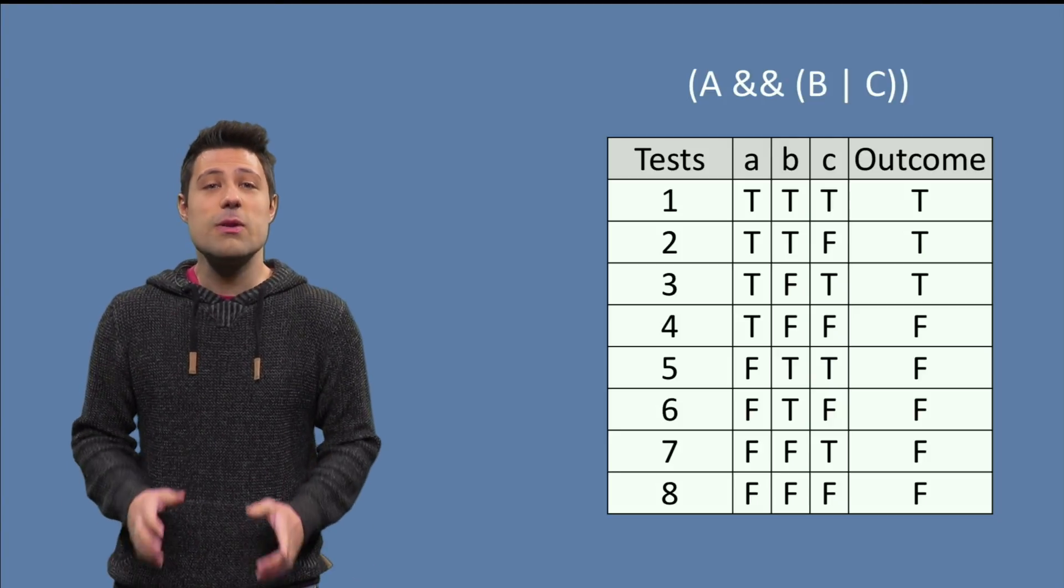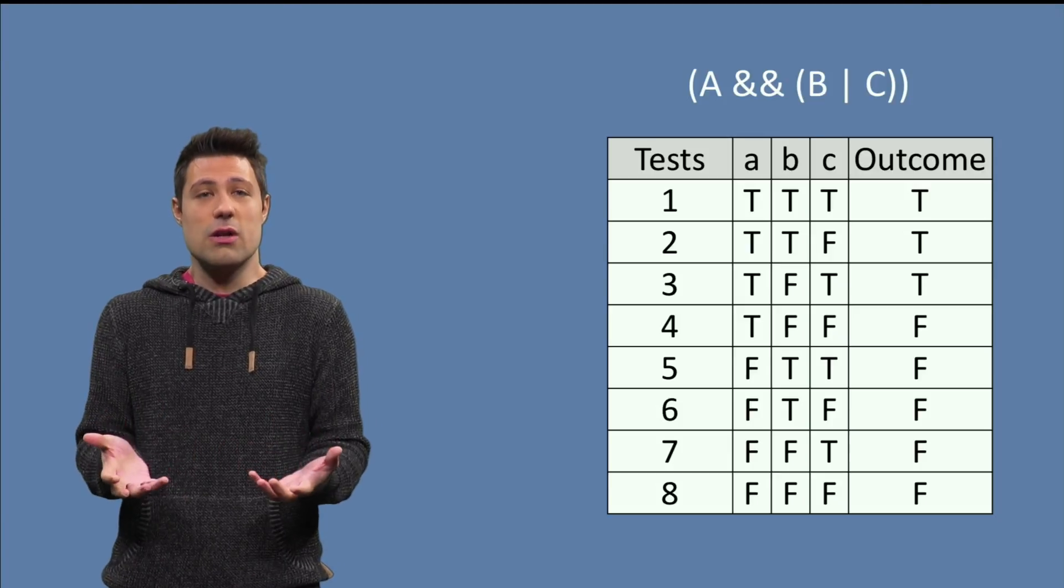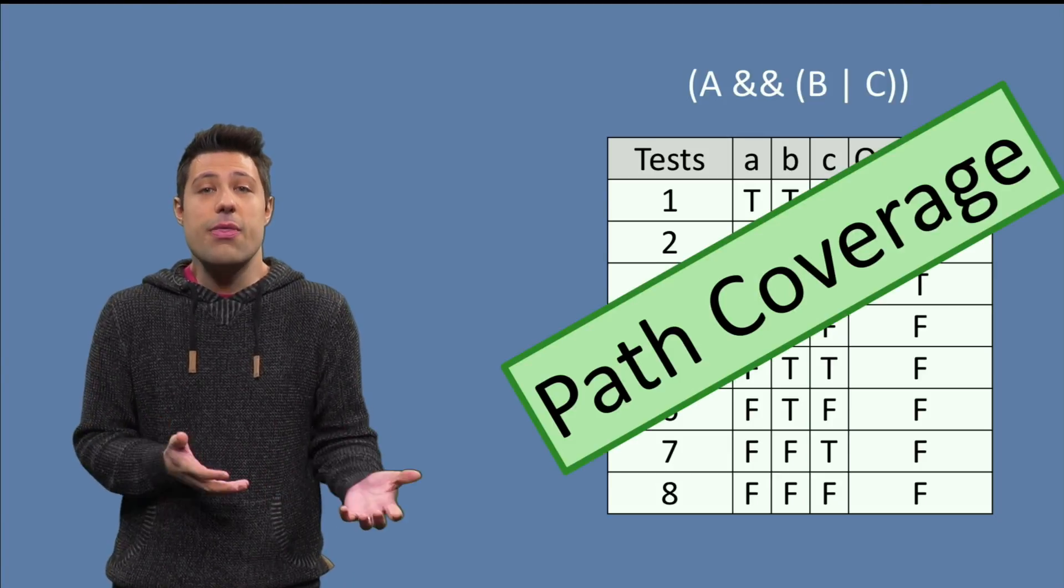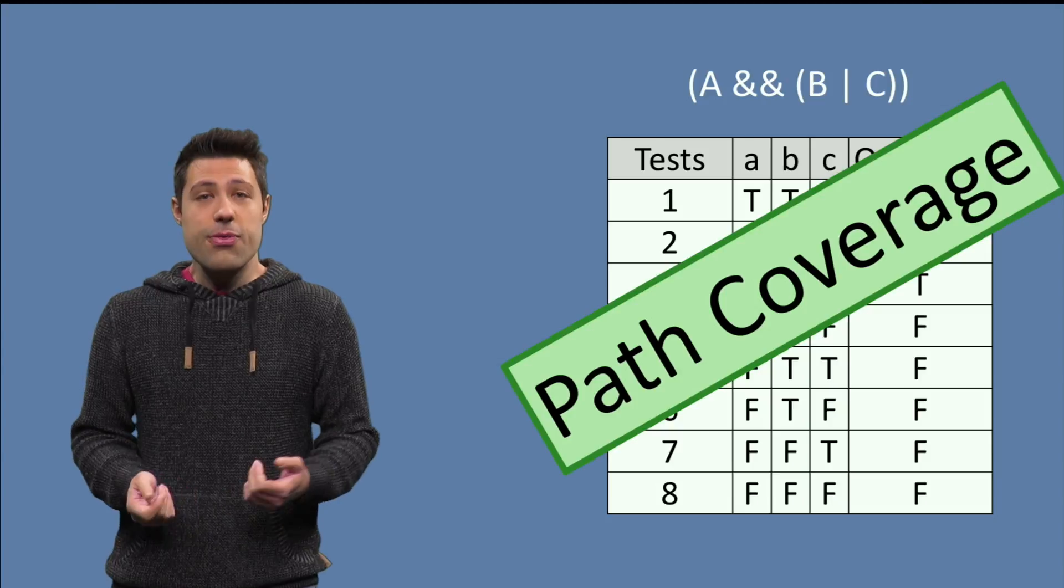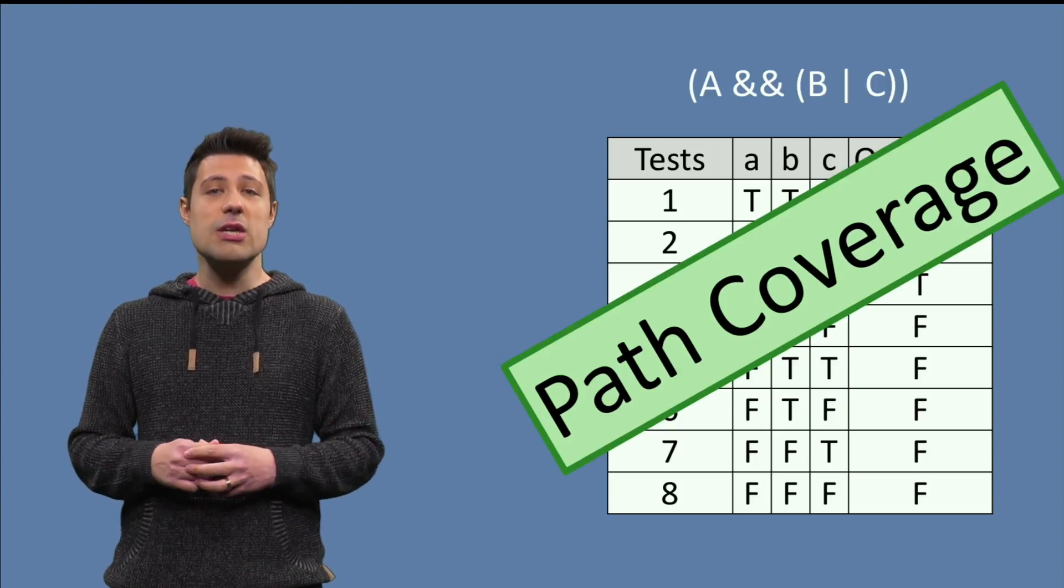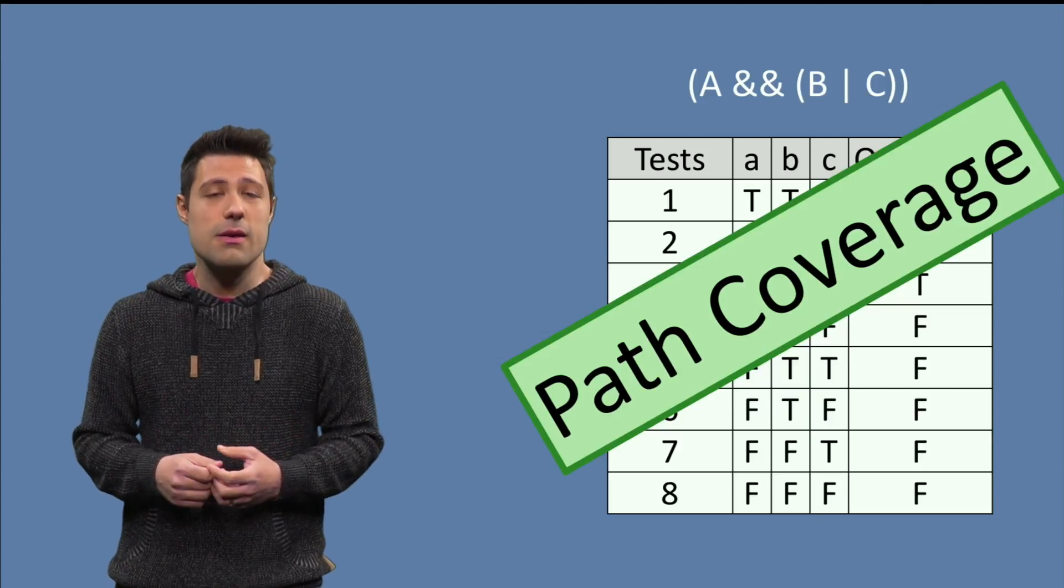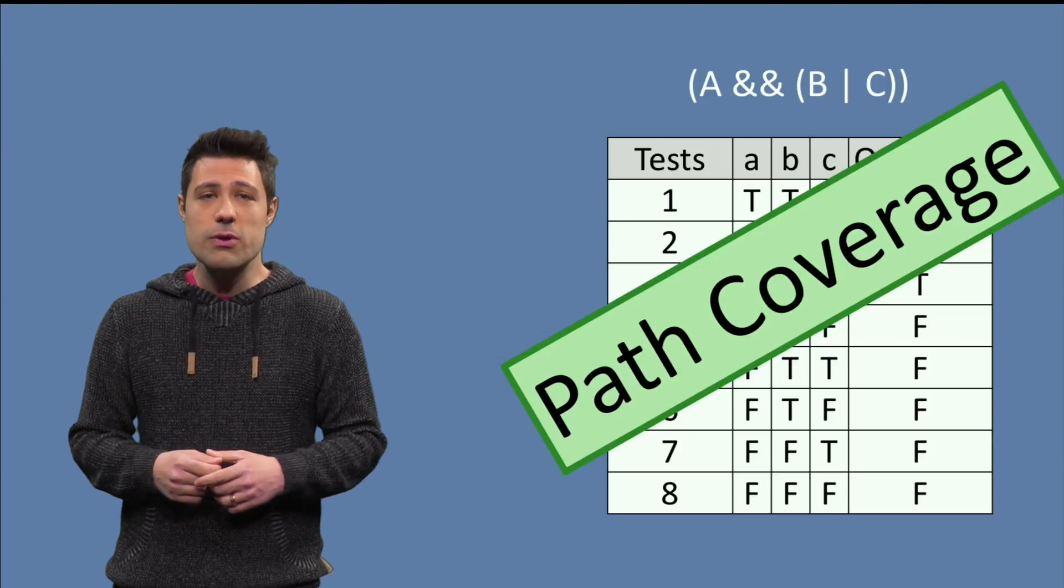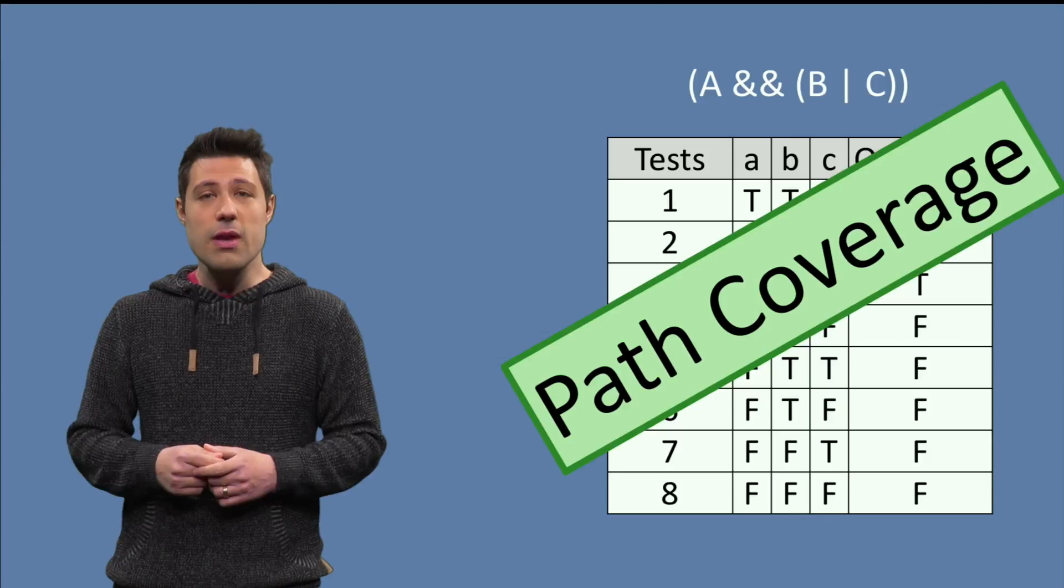So we are getting to the point that we want more than condition coverage. We want path coverage. Path coverage means that we want to really test all the possible paths and combinations that our program may take. Do you think that's possible? Pause this video and think about it for a second.